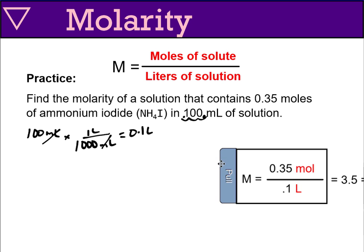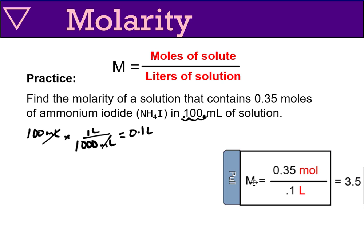So we have molarity is equal to 0.35 moles divided by 0.1 liters. It gives us 3.5 molar solution of ammonium iodide. So that's how you find the molarity of a solution. You divide moles by volume in liters.